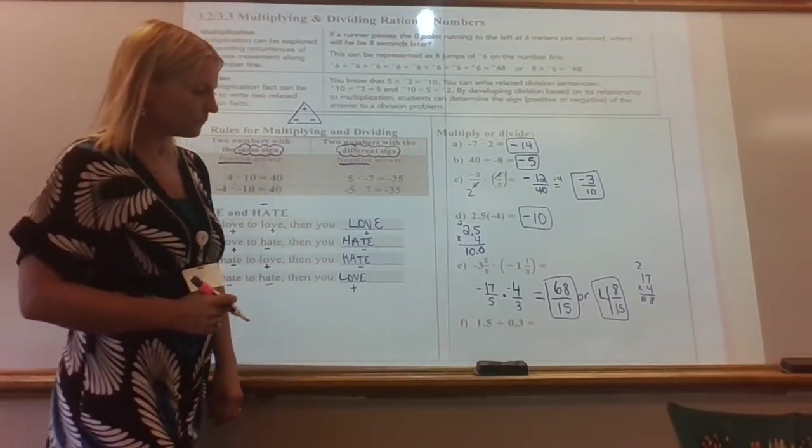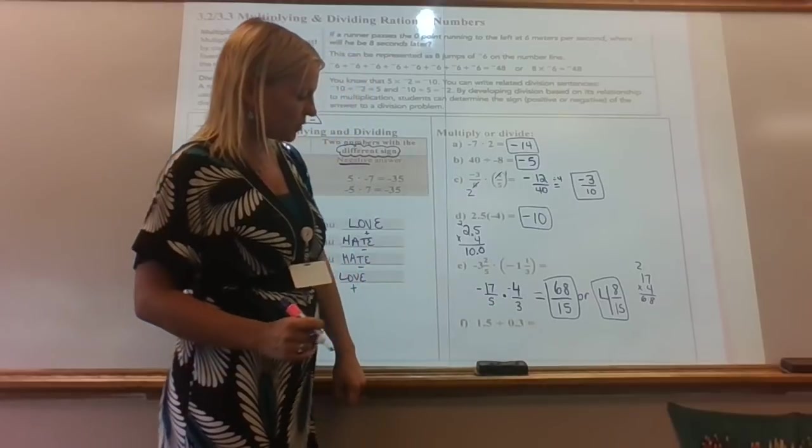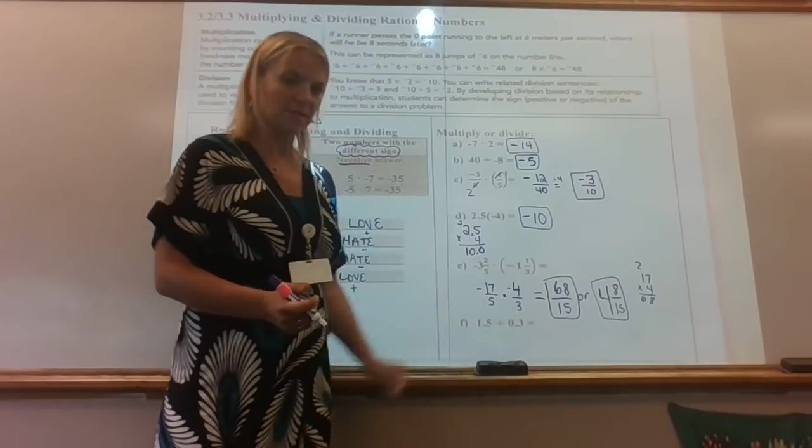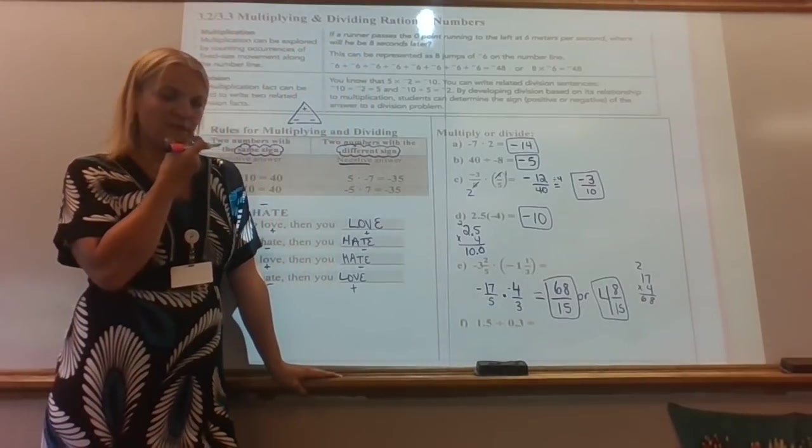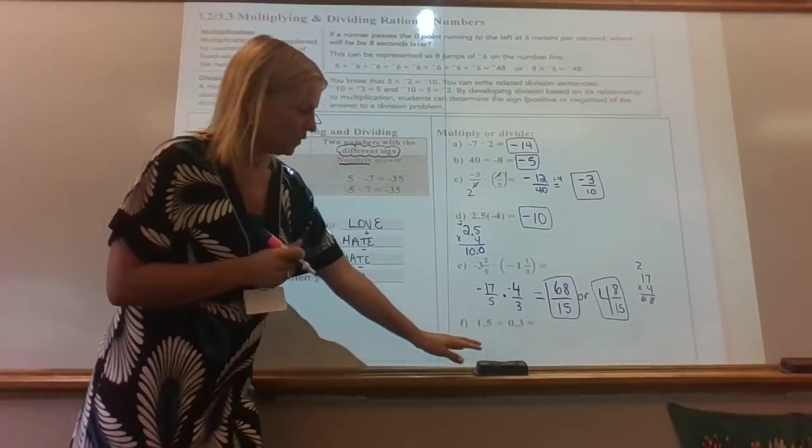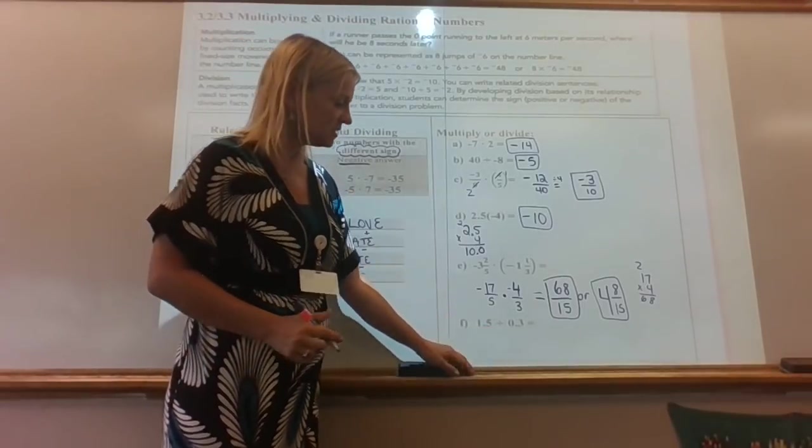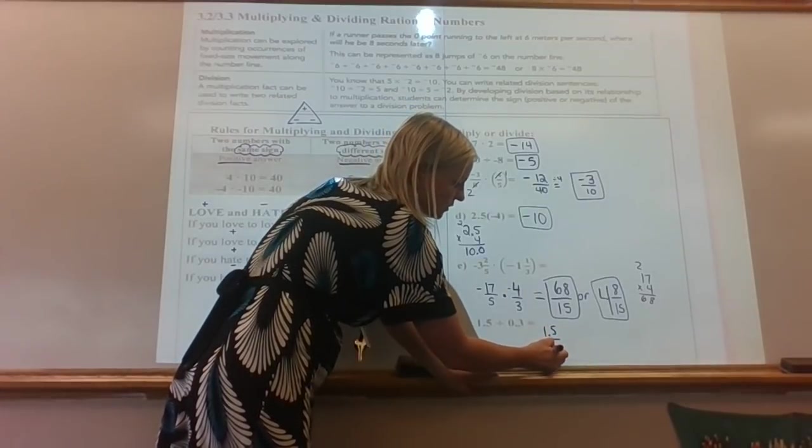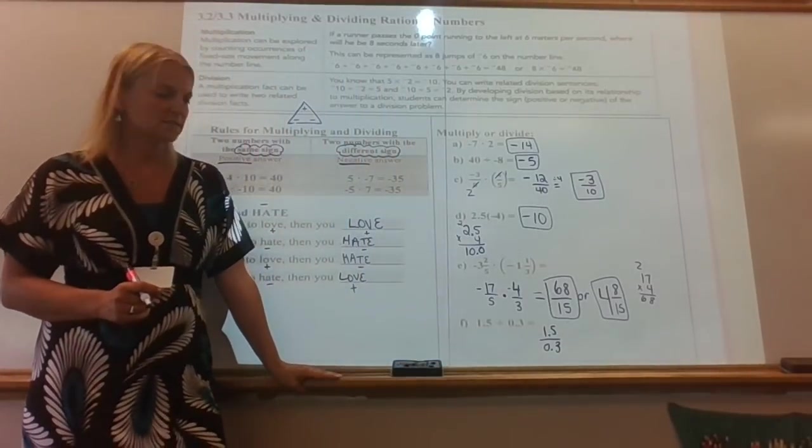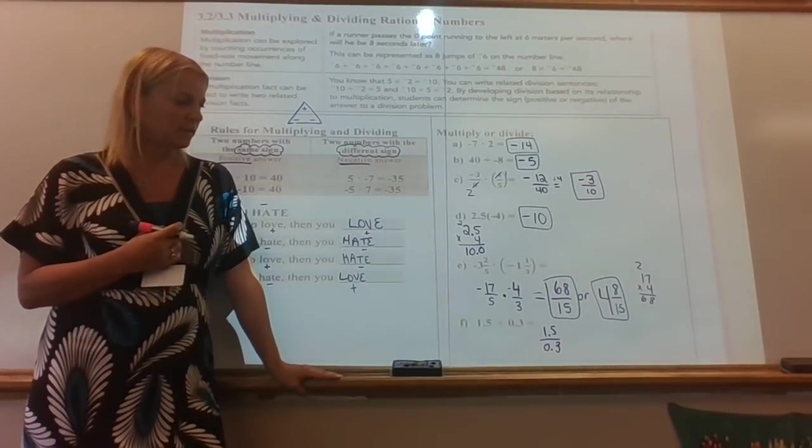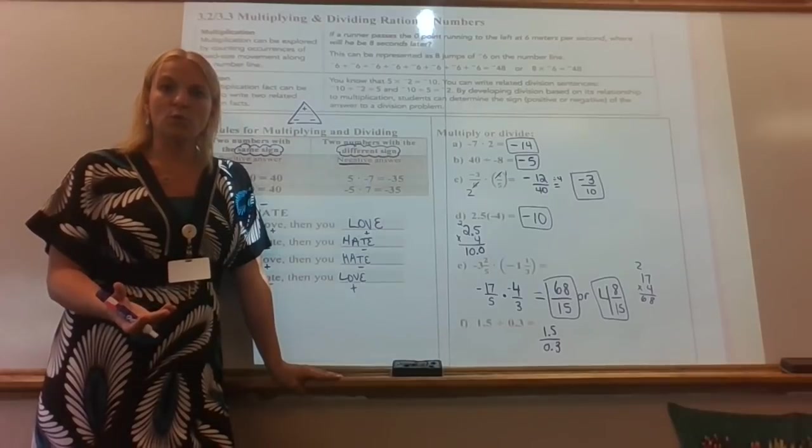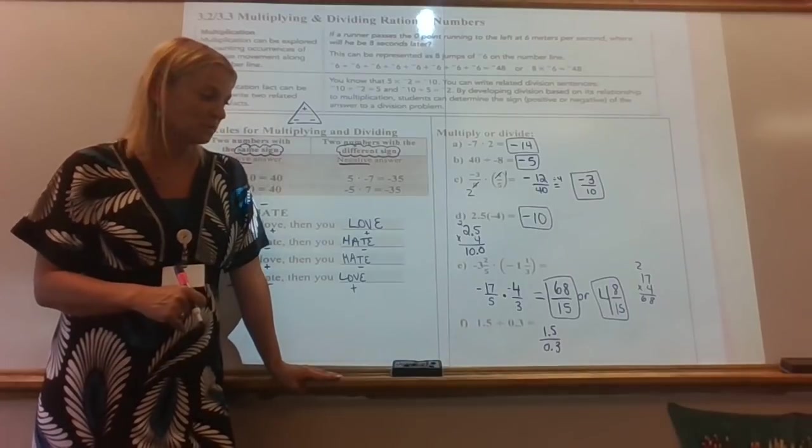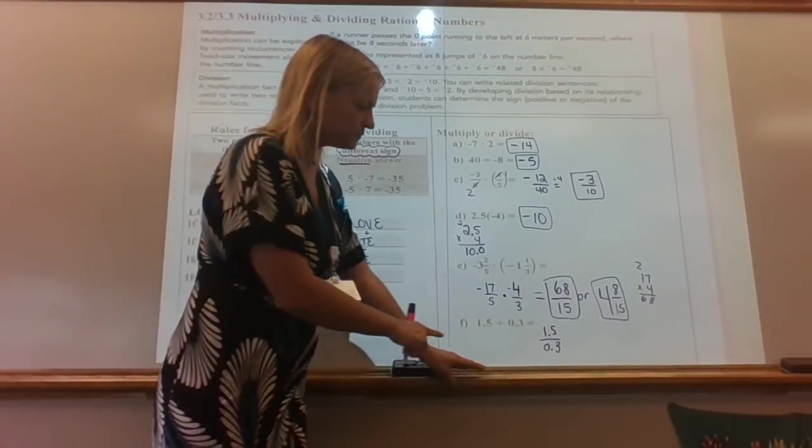One more problem. We got 1.5 divided by 0.3. I don't have any negatives here. So I know two positives. They're the same sign. It's going to make a positive. So I'd be thinking, how do I divide with decimals? Here's a little trick. We know that a division, we can write it like this. We can also write division like this, as if we do with a fraction. Now there's a reason I want you to write it like this. We've learned all along that when you're making common denominators, as long as you multiply the numerator and the denominator by the same thing, it doesn't change the fraction.